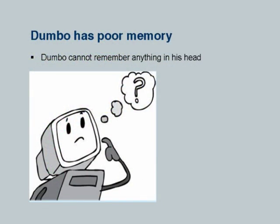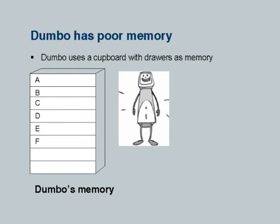The word Dumbo does interest and impress students because they can relate to Dumbo as somebody less than themselves in intellectual capability. It is very important to convey to students that however comprehensive and strong the machine might look, as a human being you are always superior in thinking capability, and it is your endeavor to make that machine work to your satisfaction. Dumbo has very poor memory — Dumbo cannot remember anything in his head. So Dumbo uses a cupboard with drawers as memory. Each drawer can contain a value, such as a number like 437 or a string like 'Ranade.'